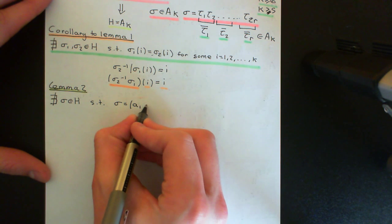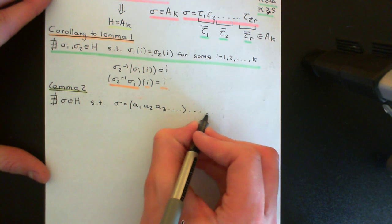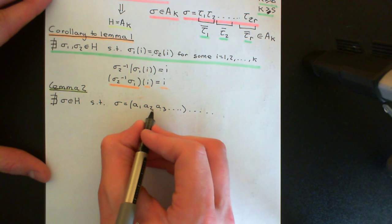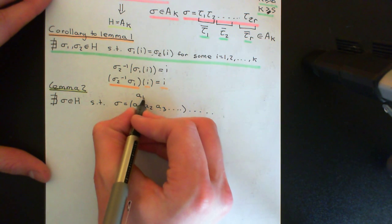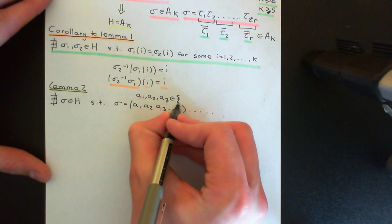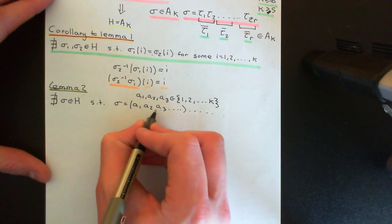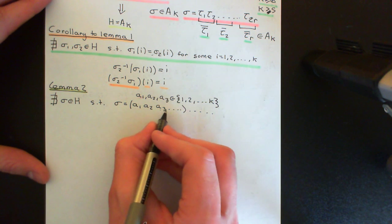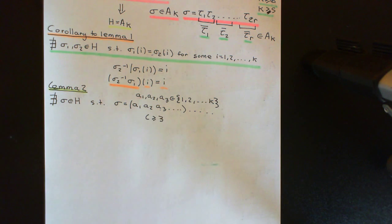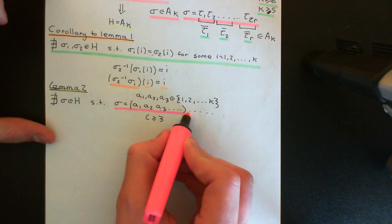The cycle decomposition of sigma cannot look something like (a1, a2, a3, ...) — a cycle of length 3 or more, where a1, a2, a3 are elements of the set {1, 2, ..., k}. So this is just some cycle of length greater than or equal to 3 that cannot appear. What we've already shown by Lemma 1 is that any non-identity element cannot have a 1-cycle in it. Now I'm restricting it further: it cannot have a cycle of length ≥ 3.